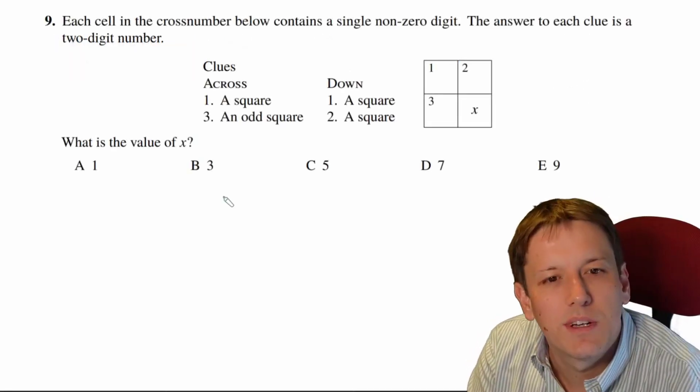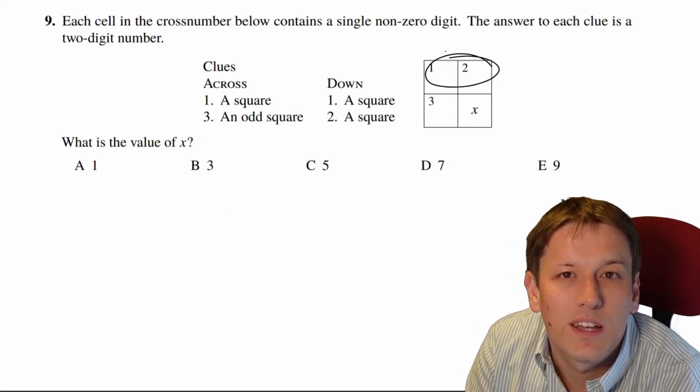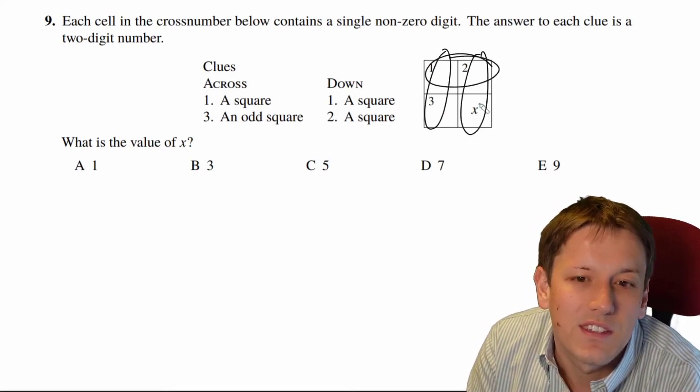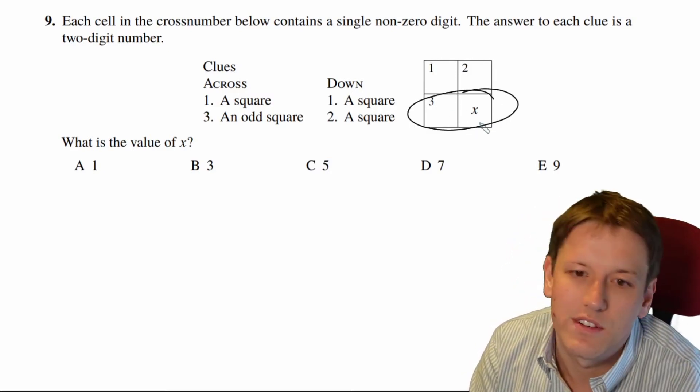Okay, in this cross-number we've got these four clues. Three of the clues are exactly the same, just that they're square numbers. Right, so this is a square number, this is a square number, and this is a square number. But three across is an odd square number, so that's where we're really going to focus our attention.